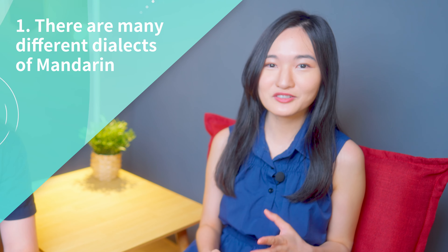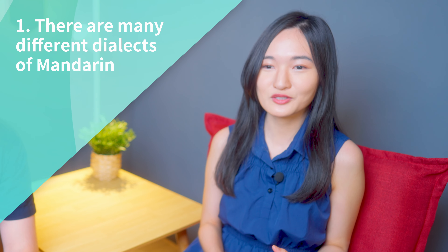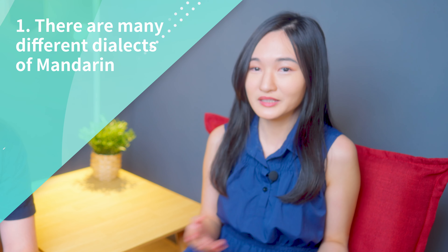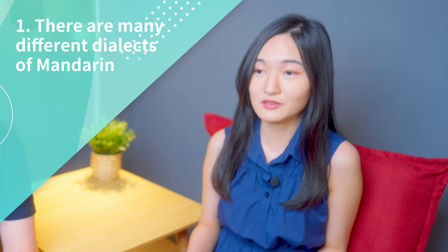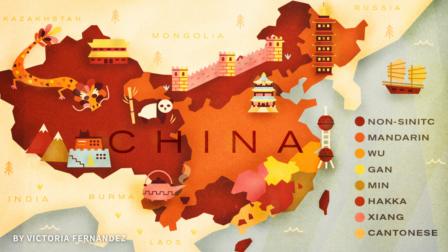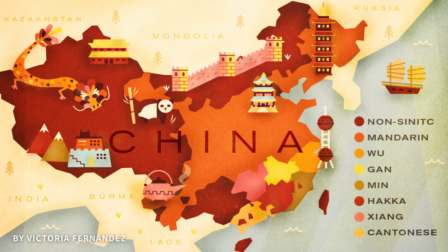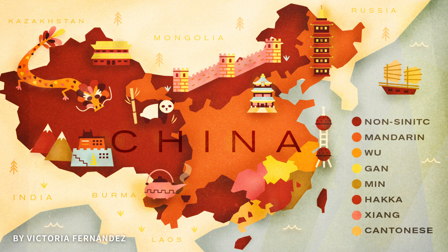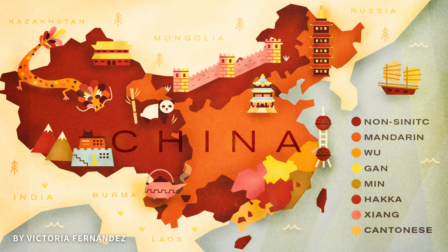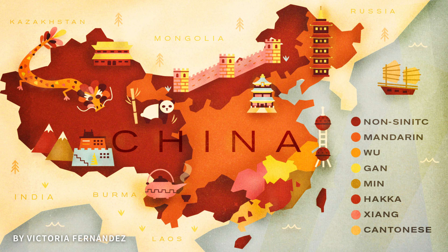Actually, many speakers speak many different dialects. So when you say that you speak Mandarin, you have to probably verify what kind of Mandarin — Hakka, Minnanese, Hokkien, so-called Taiwanese.